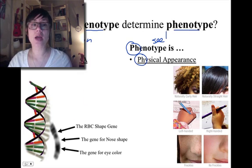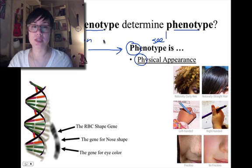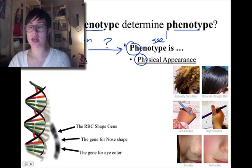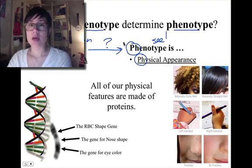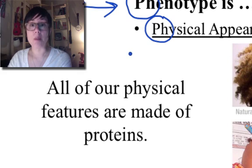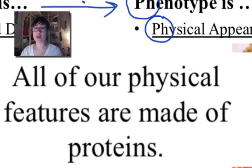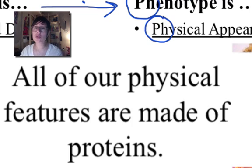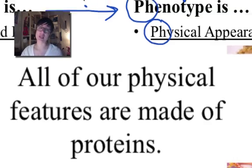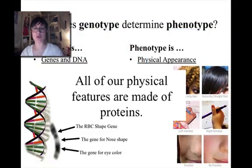So our job today is to figure out how we go from a genotype to a phenotype, because we haven't discussed that yet in class. Something to keep in mind is that all of our physical features are made up of proteins — we're basically a big pile of proteins. So if we want to understand why our proteins look the way they do, we have to go back to the DNA. That's what we're going to be doing today.